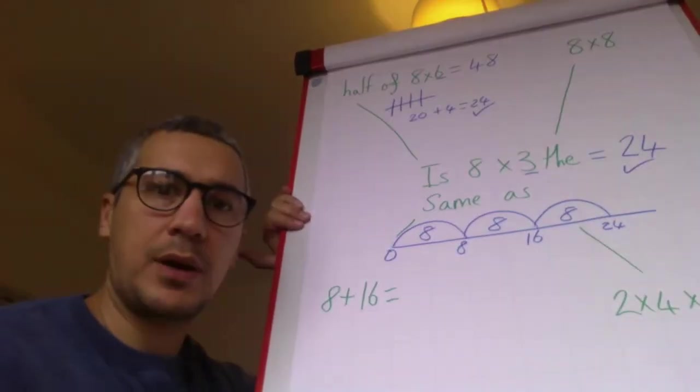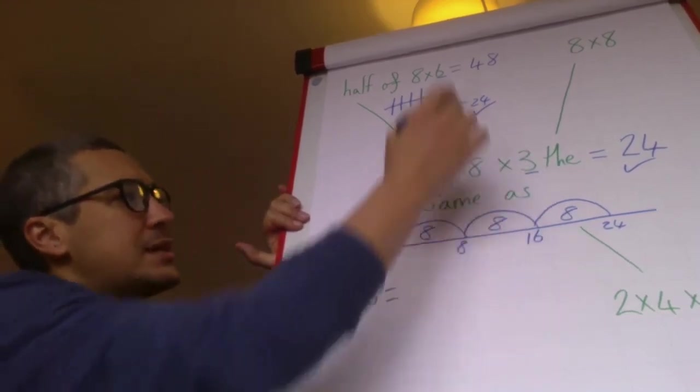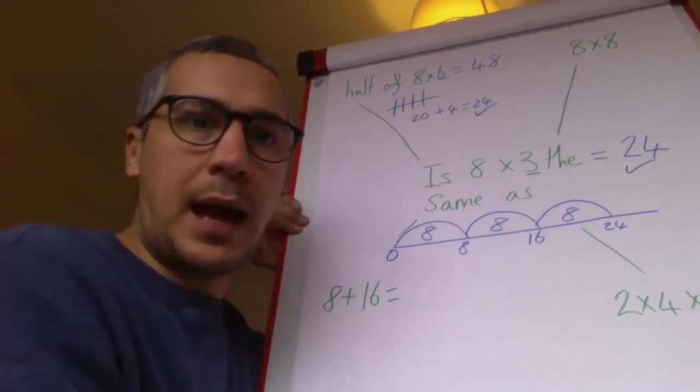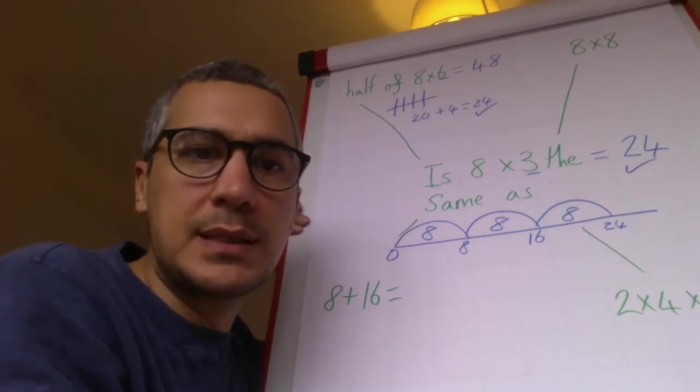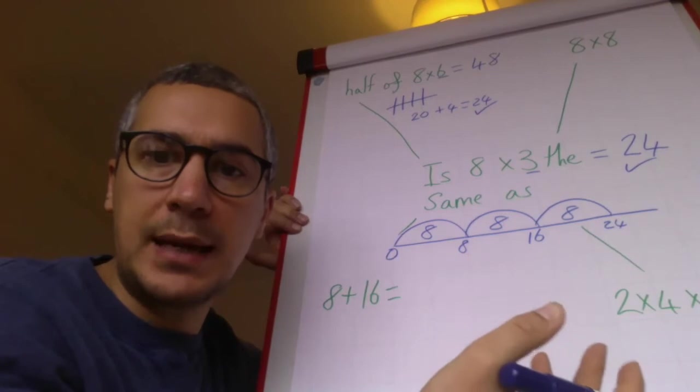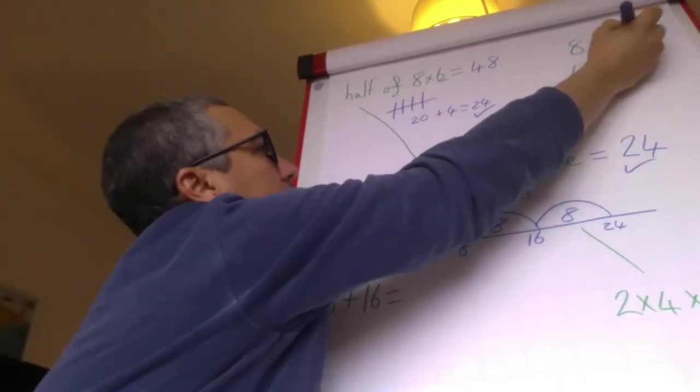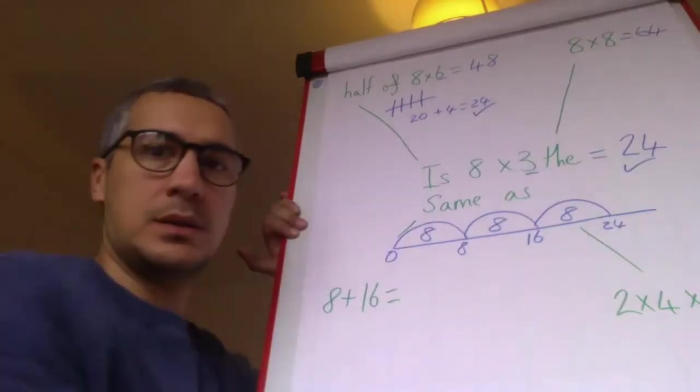That one I know is right. Next one: is eight times three the same as eight times eight? That's a nonsense question—it can't be the same because eight times eight is going to be much bigger than eight times three. Eight times eight equals 64, so I know it is not the same. That's false.